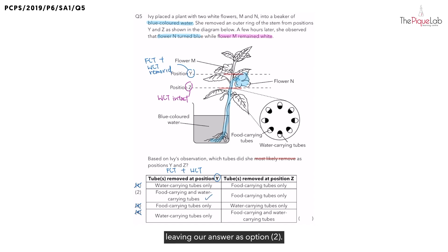leaving our answer as option 2. And based on option 2, we now know that the food carrying tubes were removed at position Z. So, our answer for this question is 2.